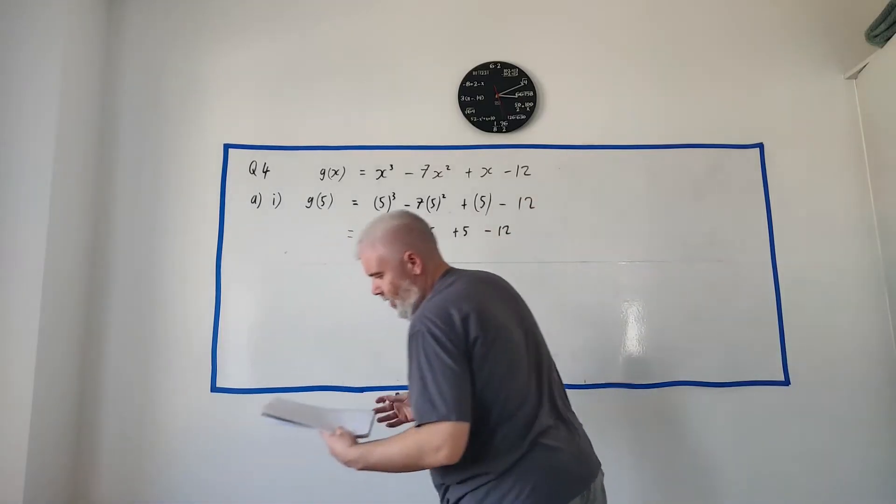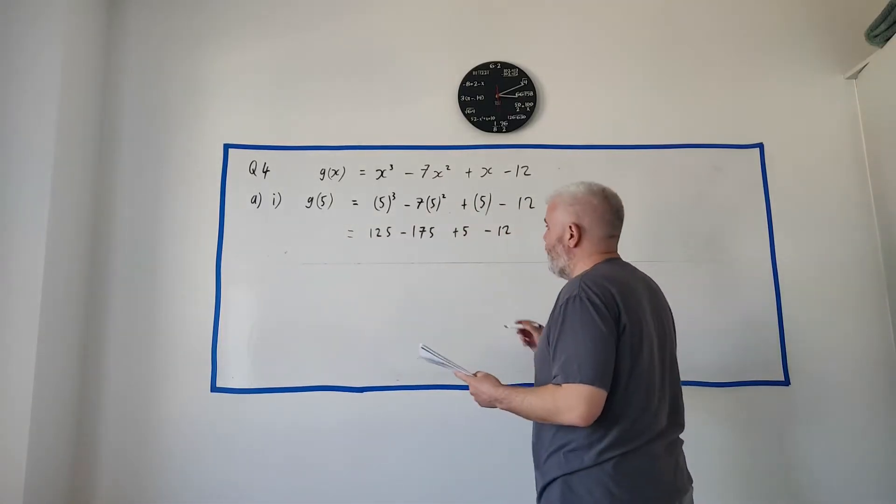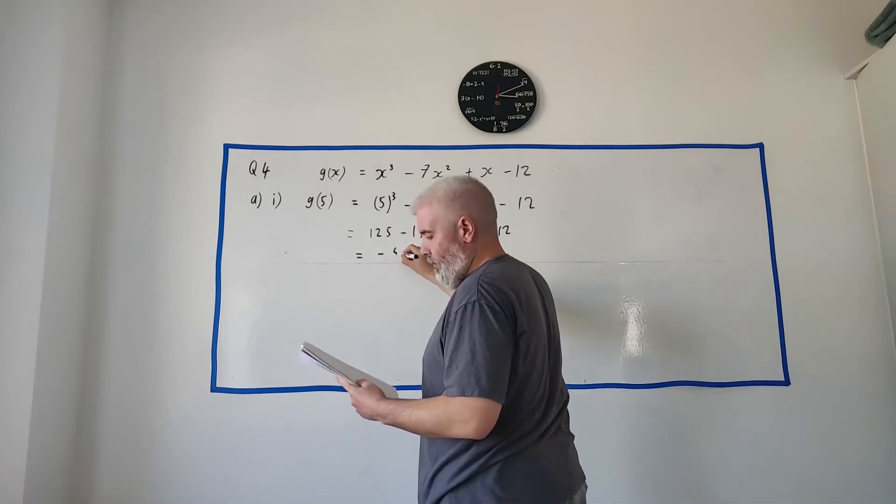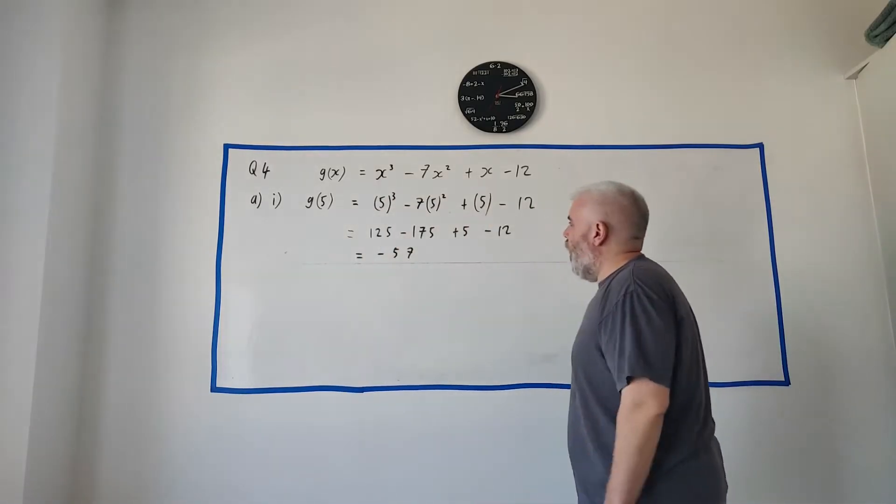Okay, we can clean all this up. Go ahead and use a calculator. 5 to the power of 3, I believe, is 125. 5 squared is 25 multiplied by 7 is 175, and then multiplied by minus, and 175 plus 5 minus 12. And again, use the calculator. I used the calculator when I did this out myself. I have the notes here. Minus 57.